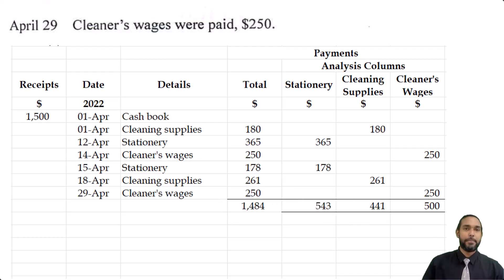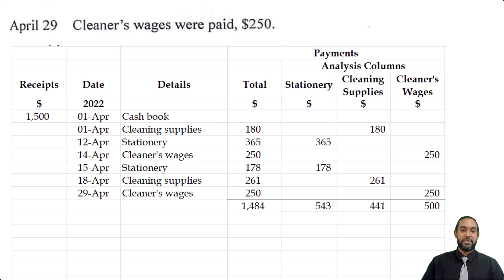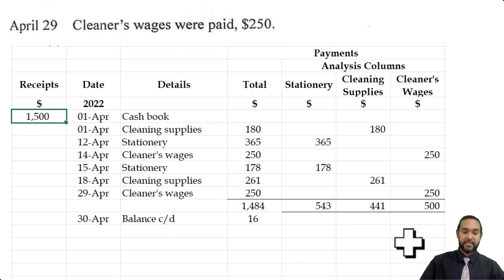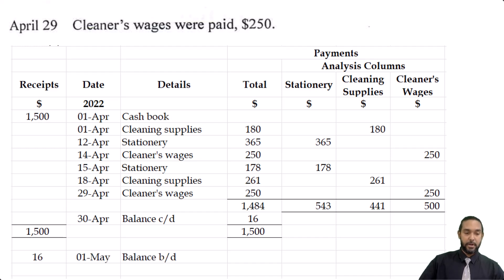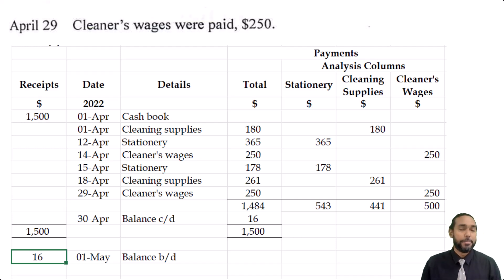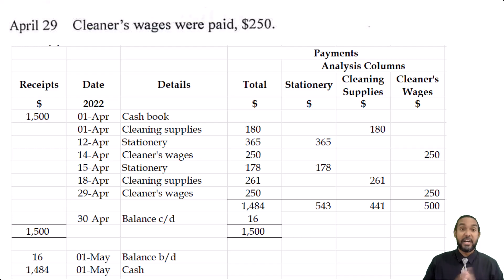Now we balance the petty cash book. The balance means how much is left: we started with $1,500 and spent $1,484, leaving $16. I subtract expenditure from the opening amount — $16 — and bring that balance down on 1st of May. To replenish the petty cash fund, we put back exactly the amount spent — $1,484 — to return to the imprest amount of $1,500. That entry is recorded on 1st of May.